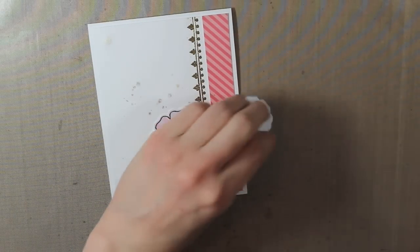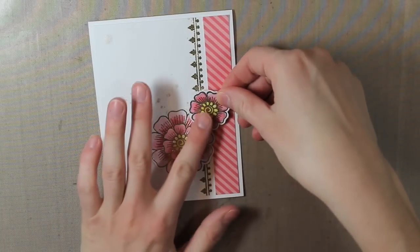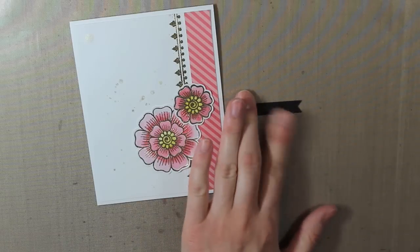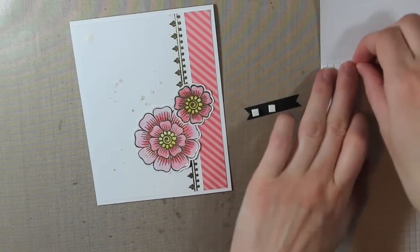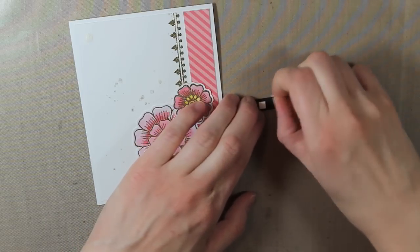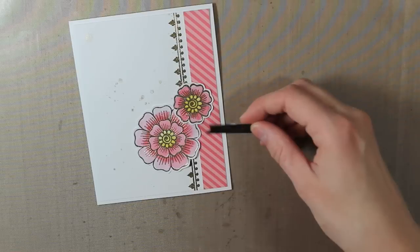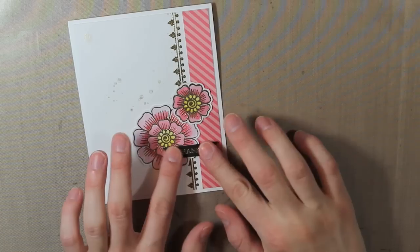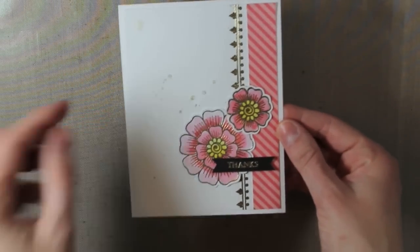So I'm just adhering down the flowers with my ATG gun. And then I'm going to adhere the sentiment with some 3D foam squares. These are the small ones from Best Creation. And then I'm going to have that overlap the larger flower on the bottom. And I really love this combination of pinks and golds. And that pattern paper actually matches those colors perfectly. So it looks really awesome in person.